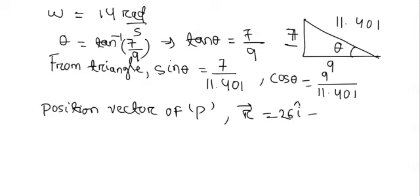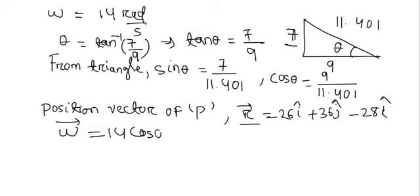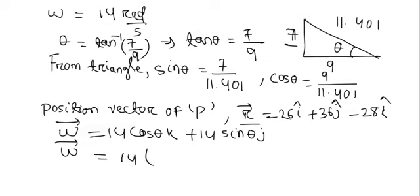So angular velocity of the position vector is equal to 14 cos theta k plus 14 sin theta j. Now from this we can write 14 into 9 divided by 11.401k plus 14 into 7 divided by 11.401j.